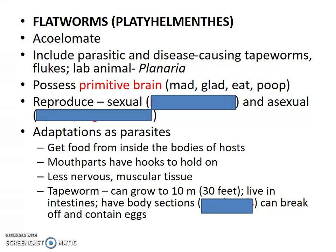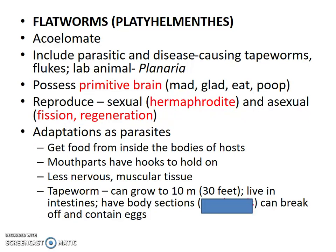They can reproduce sexually — they are hermaphrodites, producing both viable sperm and eggs. A true biological hermaphrodite produces both sperm and eggs, so there's not a true human hermaphrodite. They can also reproduce asexually through fission and regeneration.